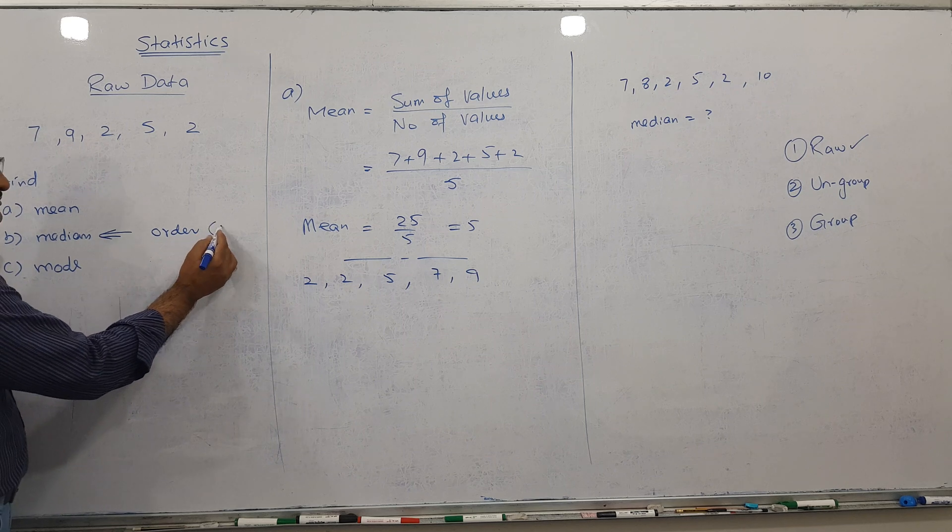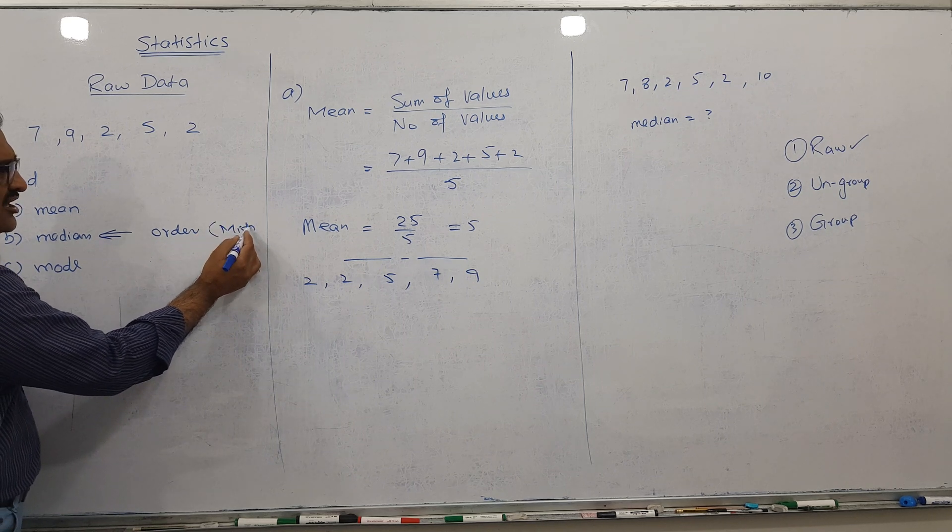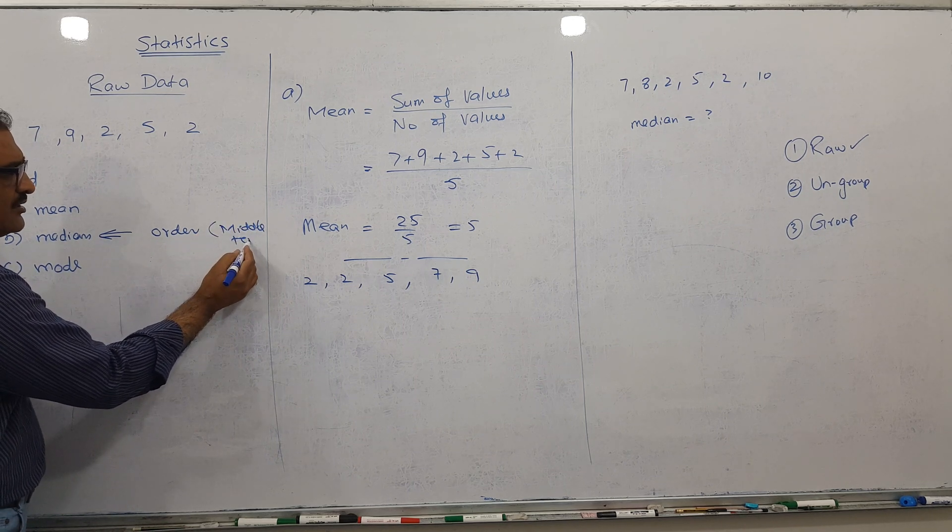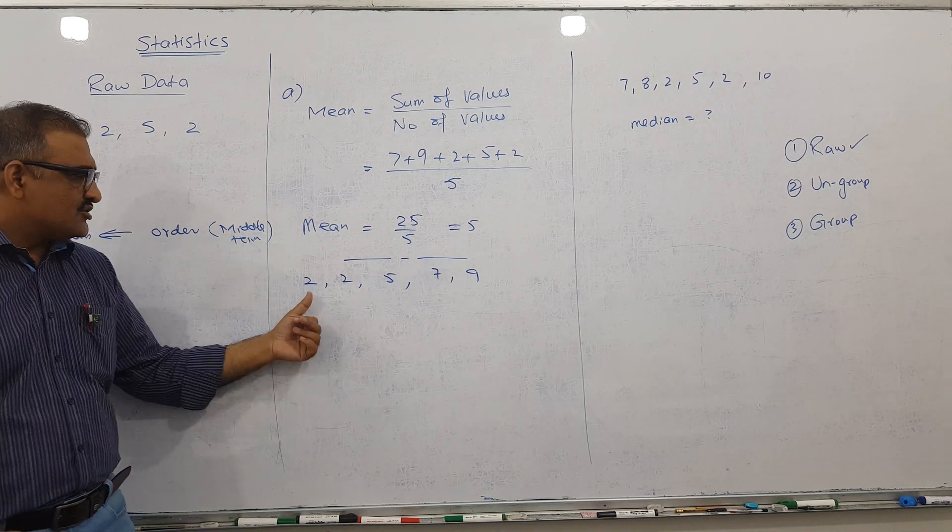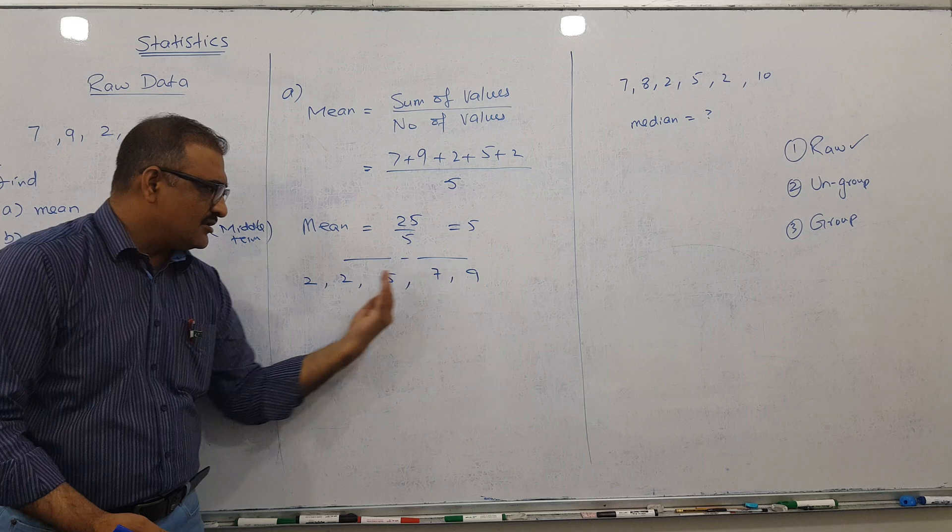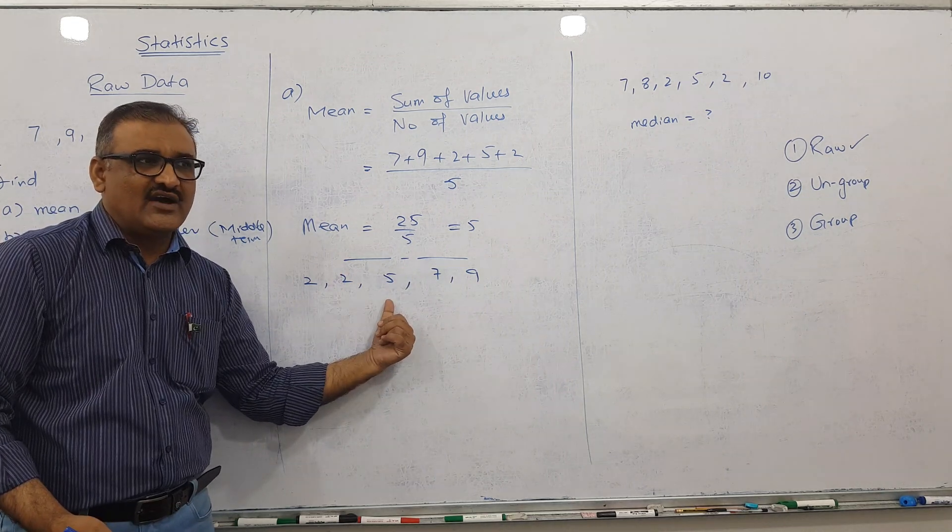What is median by definition? After arranging, the middle term is our median. I can find it directly. This cancels from here, this cancels, this cancels. My answer is 5.